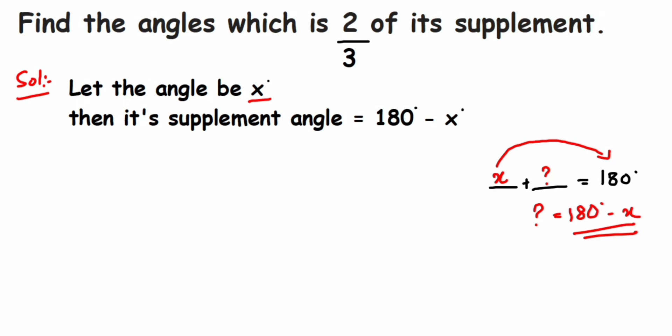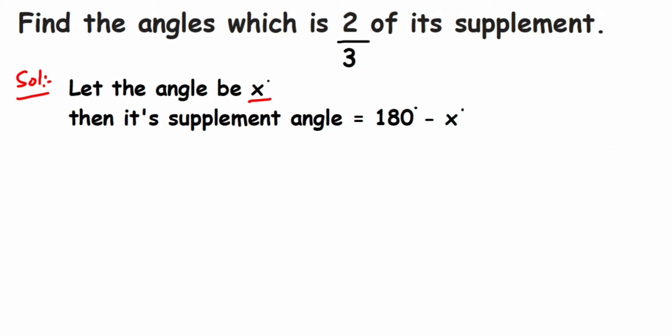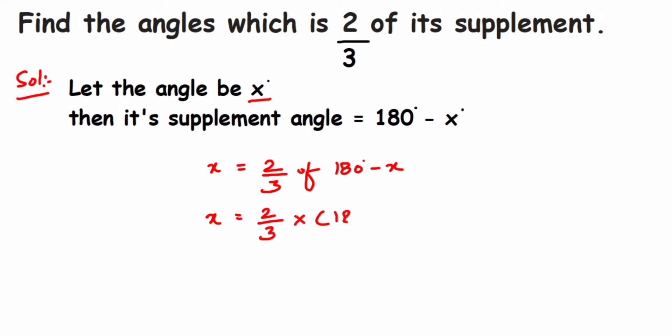Let's read the question once again. We are given: find the angle which is two-thirds of its supplement. That means angle x is two-thirds of its supplement, and the supplement is 180 degrees minus x. So we need to find the value of x. The equation becomes: x equals two upon three multiplied by (180 minus x).